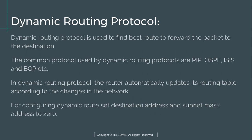Dynamic routing protocol is used to find the best route to forward packets to the destination, and it is configured automatically in the network. The common protocols used in dynamic routing are RIP, OSPF, ISIS, and BGP. The router automatically updates its routing table according to changes in the network. For configuring dynamic routes, set the destination address and subnet mask to zero.